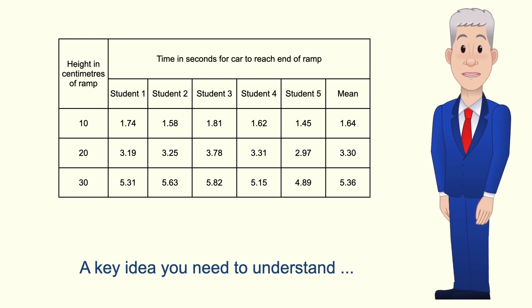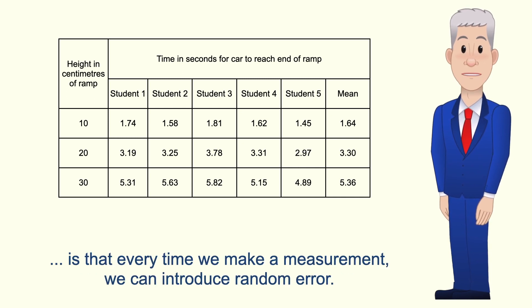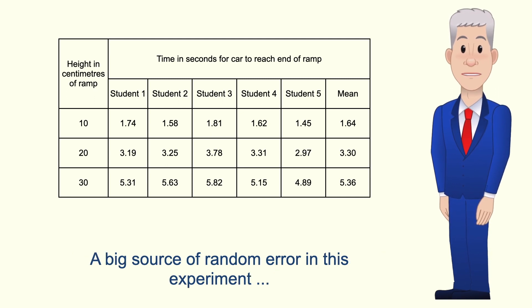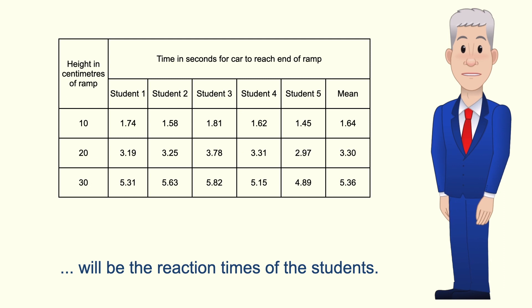Now a key idea you need to understand is that every time we make a measurement we can introduce random error. And a big source of random error in this experiment will be the reaction times of the students.